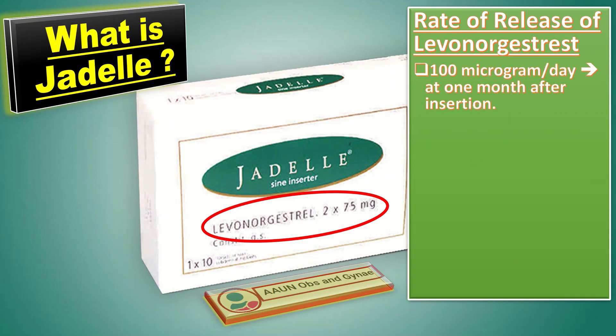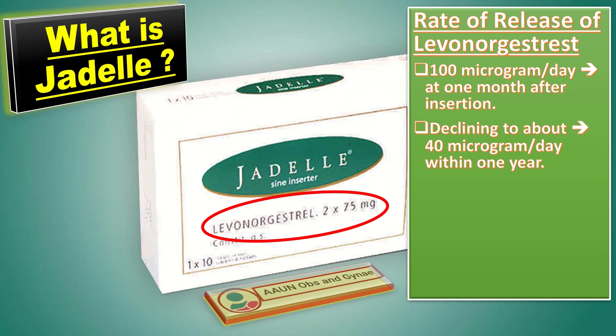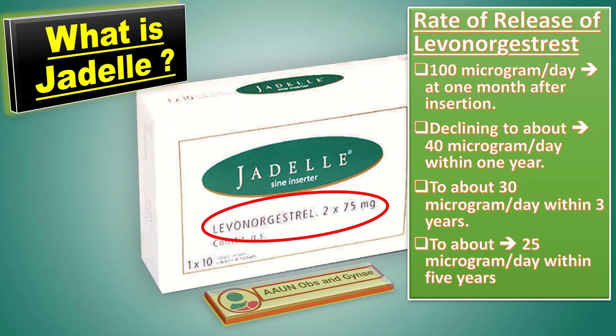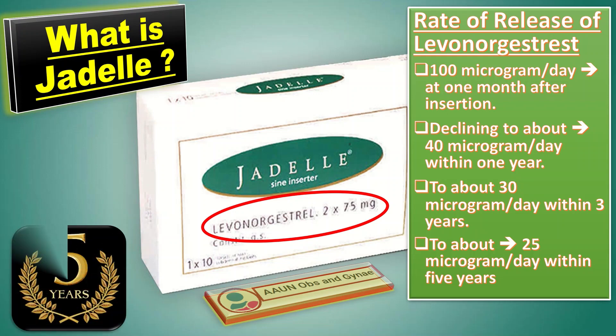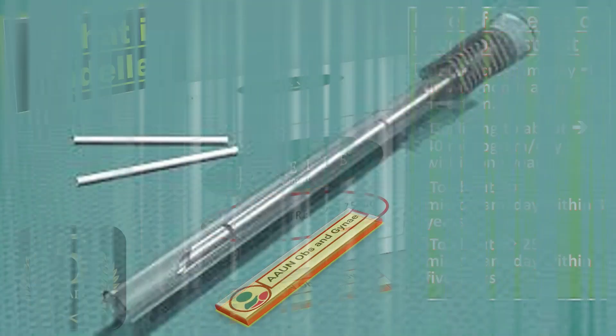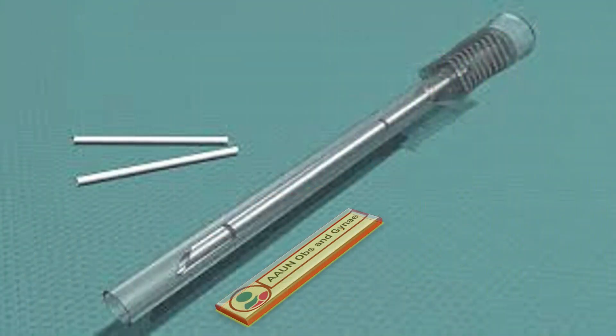The release rate declines to about 40 micrograms per day within one year, to about 30 micrograms per day within three years, and to about 25 micrograms per day within five years. Jadelle provides contraception for five years.